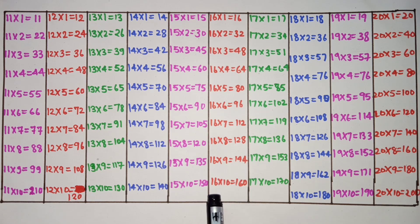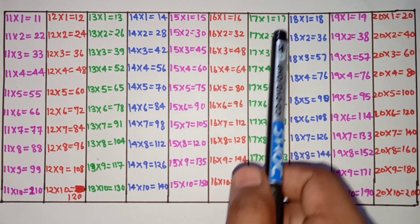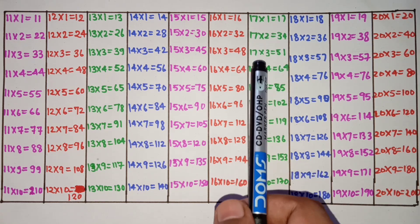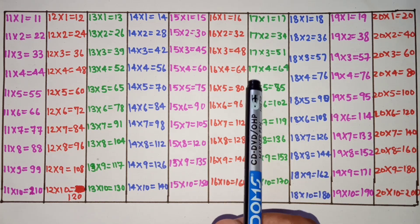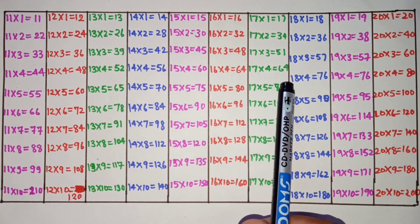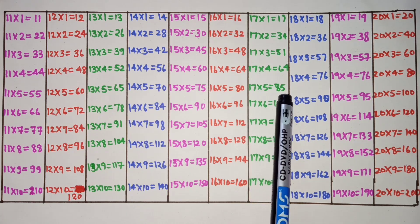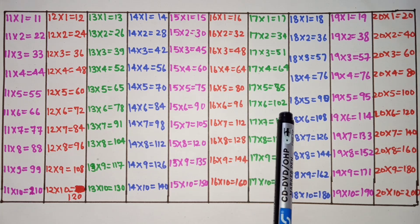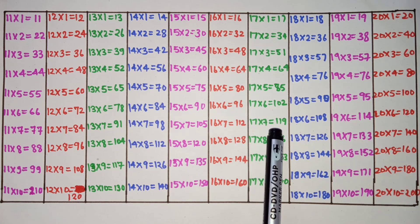16 tens are 160. 17 ones are 17, 17 twos are 34, 17 threes are 51, 17 fours are 64, 17 fives are 85, 17 sixes are 102, 17 sevens are 119.